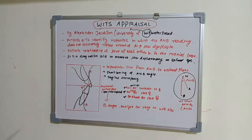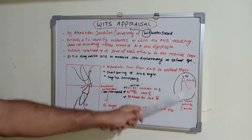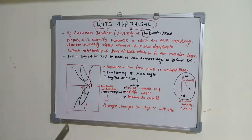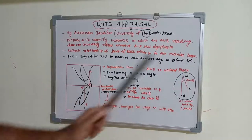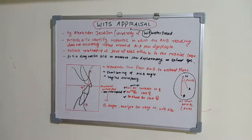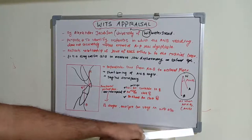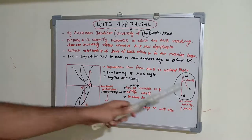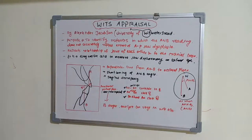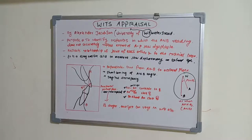We have seen the ANB angle — that is nasion, point A on the maxilla, and point B on the mandible. This ANB angle is usually two degrees, as seen in Steiner's analysis. But sometimes this reading might be wrong. There are shortcomings in the ANB angle because it decreases when the anterior facial height is increased. To avoid those ANB angle discrepancies, Alexander Jacobson put forward the Wits appraisal.